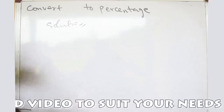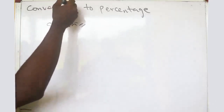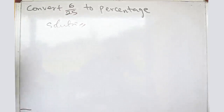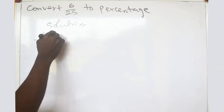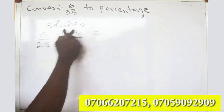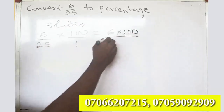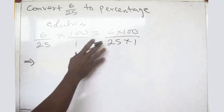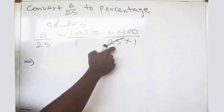Suppose I give you something like six over twenty-five — convert six over twenty-five to a percentage. The solution is: six over twenty-five, to convert to percentage, multiply by one hundred divided by one. So you have six times one hundred divided by twenty-five times one.